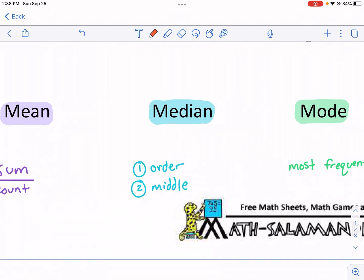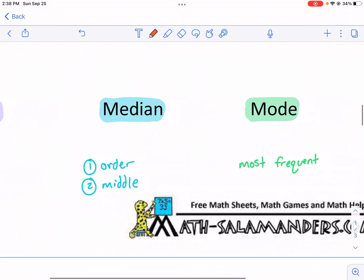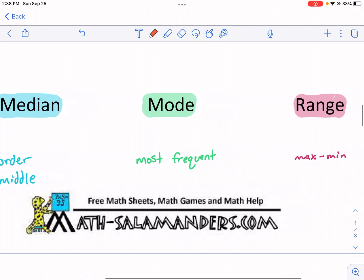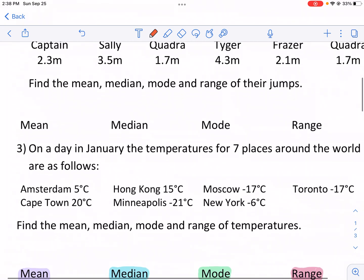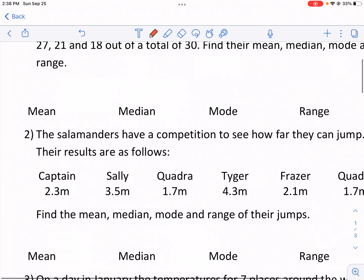We're going to add up the numbers, then divide by how many numbers we have, by the number of data points. The median, we're going to put them in order first, least to greatest, and then we're going to find the middle of those numbers. The mode is the most frequent number, and then the range is the max minus the min.